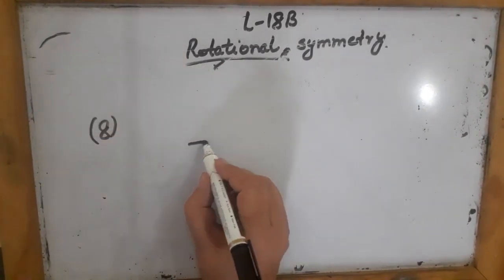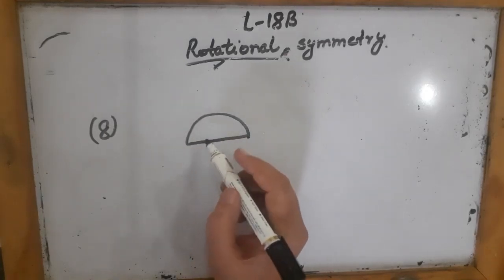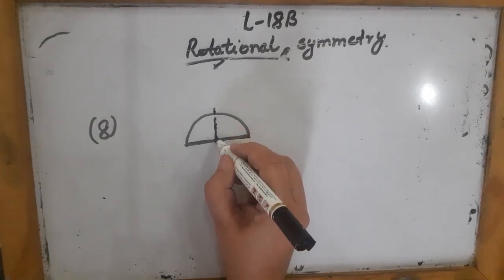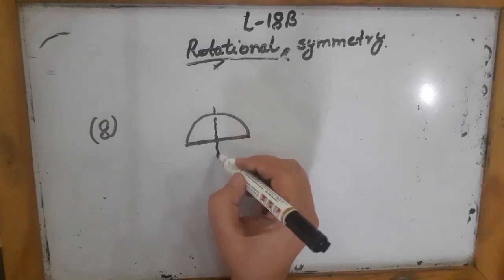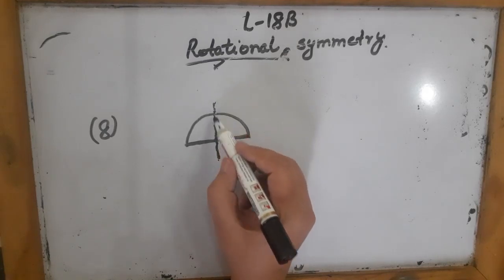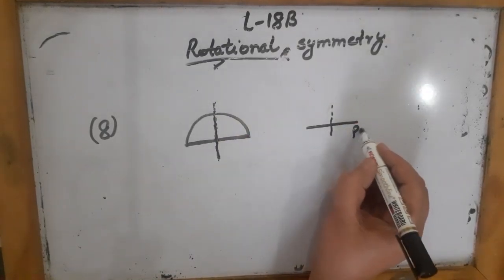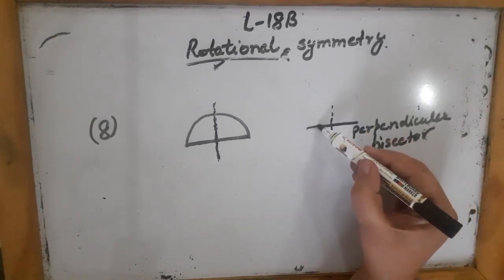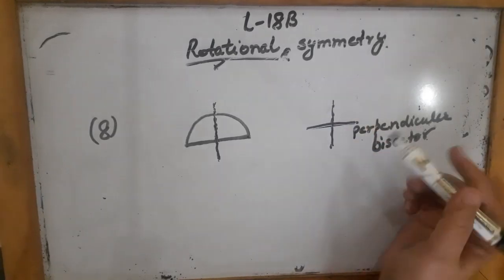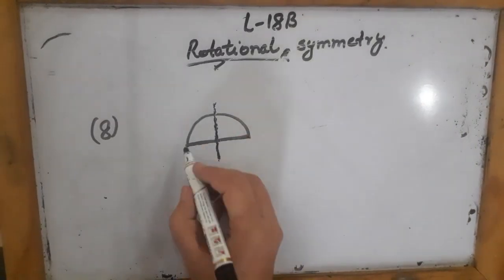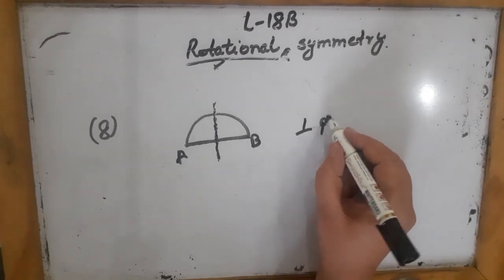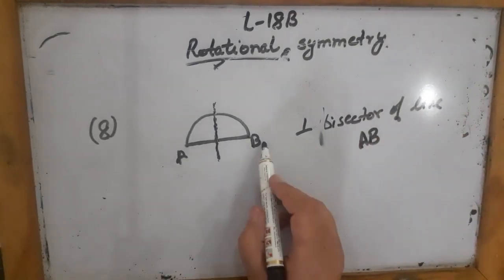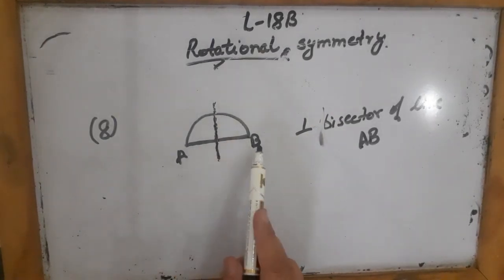In question 8, they are asking: what is the line of symmetry of a semi-circle? A semi-circle can be divided into two equal parts vertically. When we divide any line into two equal parts, that is called the perpendicular bisector. So the perpendicular bisector of the line AB is the line of symmetry of the semi-circle.